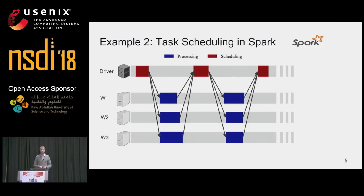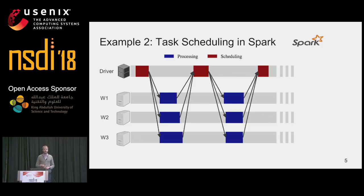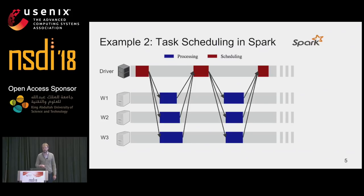My second example is task scheduling in Apache Spark. Spark has an architecture where a driver schedules work and distributes that to workers. They compute, and once they are finished, they report that to the driver. After all workers have finished, the driver will schedule a new round of work. In this sense, the driver acts as a synchronization barrier. Looking at that diagram, it's kind of obvious that the driver is potentially a latency bottleneck.